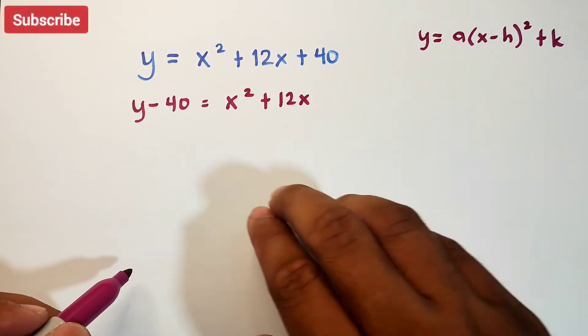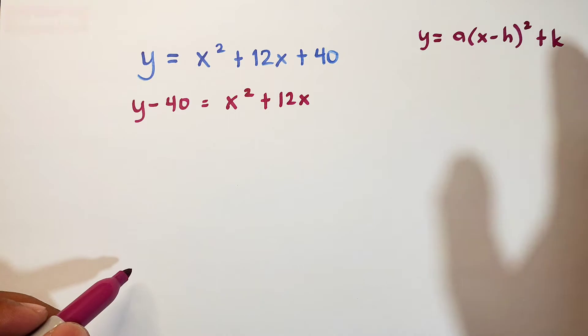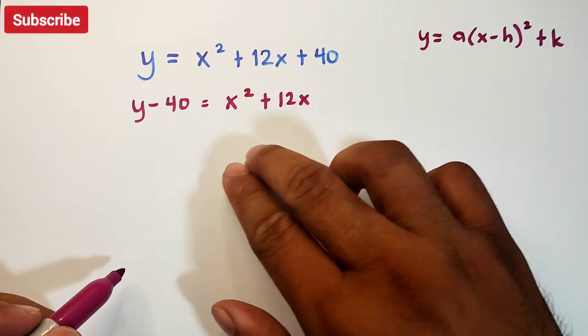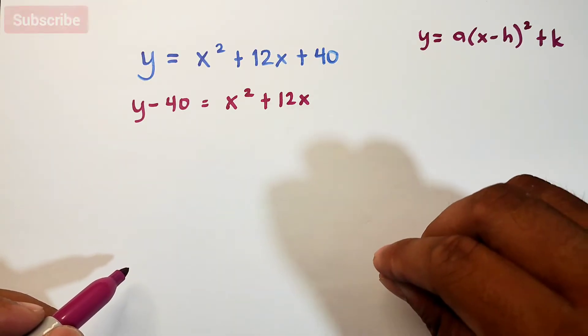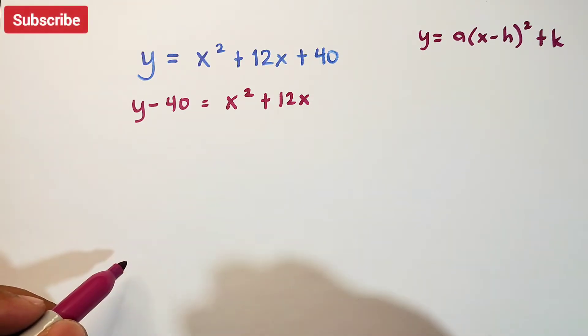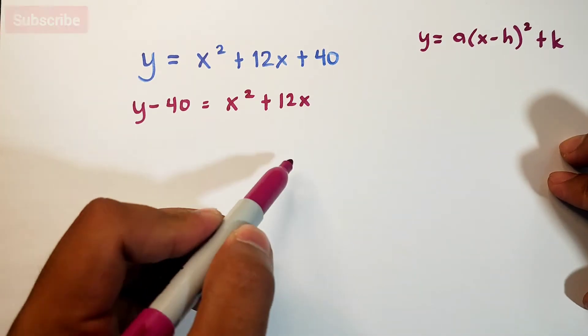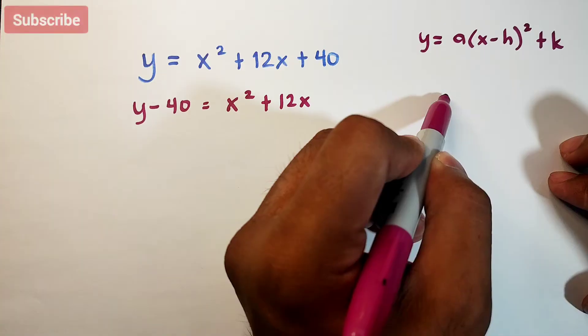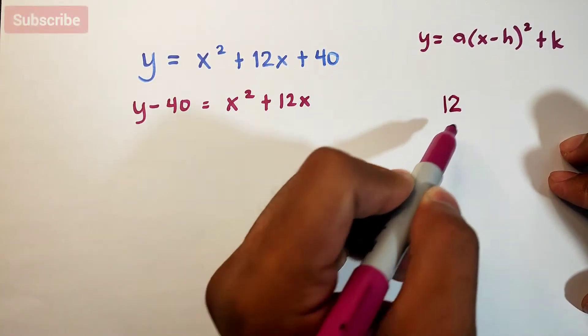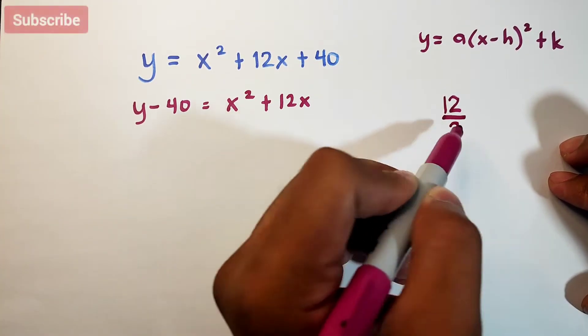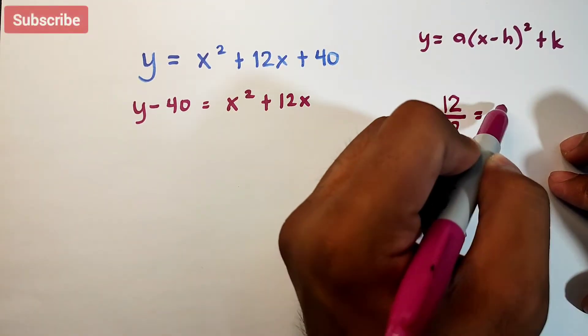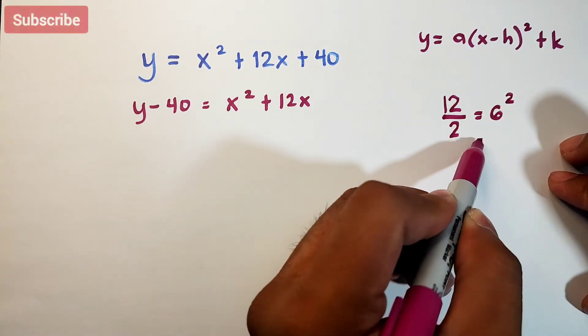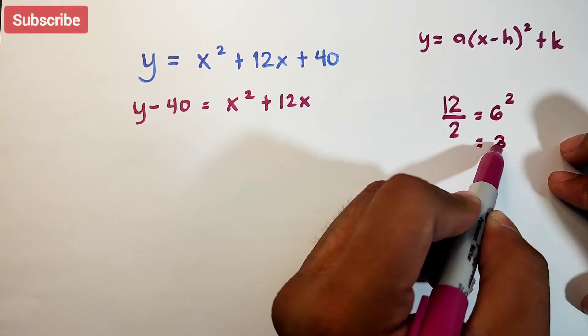After that, our target on the right side is to transform this into a perfect square trinomial. This is completing the square. We will get the constant 12 and divide it by 2. The answer is 6. The 6 is squared, giving us 36.